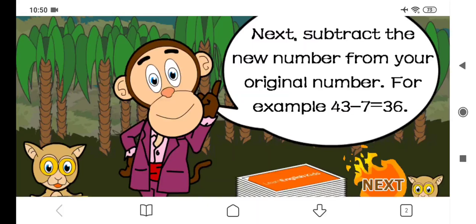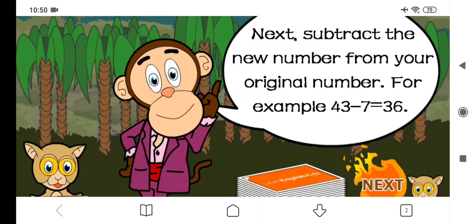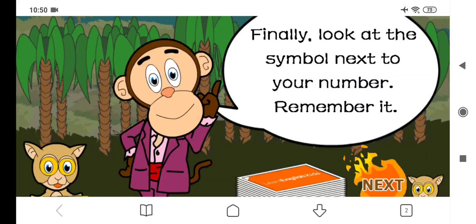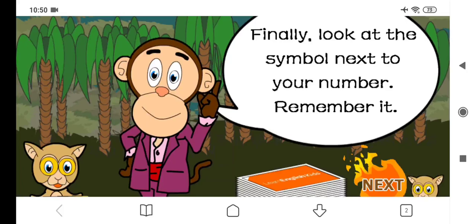Next, we must subtract the new number from our original number. For example, forty-three minus seven is thirty-six. My number was fifteen, so I write fifteen minus six is nine. Finally, we must look at the symbol next to our number and remember this symbol. The magic monkey will try to guess this symbol.